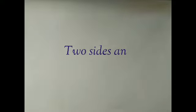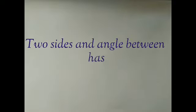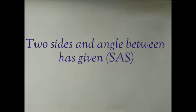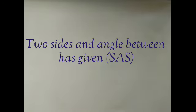Hello everyone. In this video we are going to see how to construct a triangle when two sides and the angle between them is given. We have taken an isosceles triangle ABC in which the angle between the two sides is given.